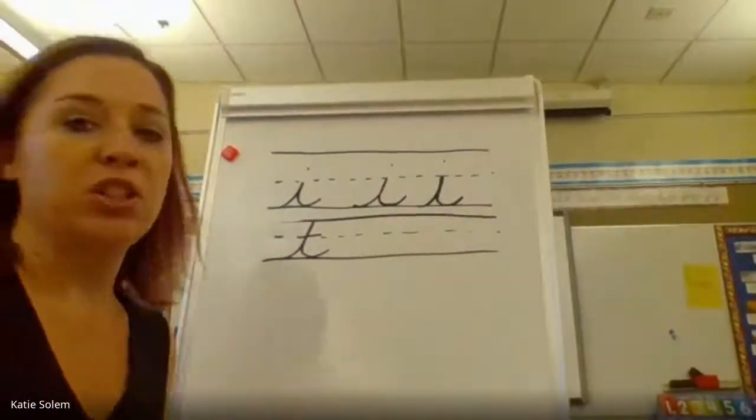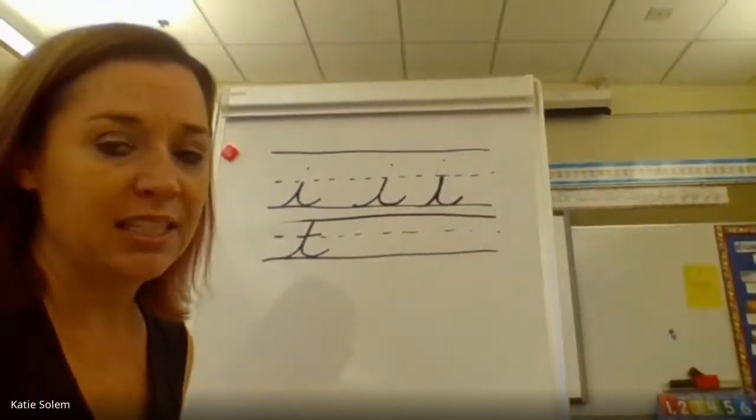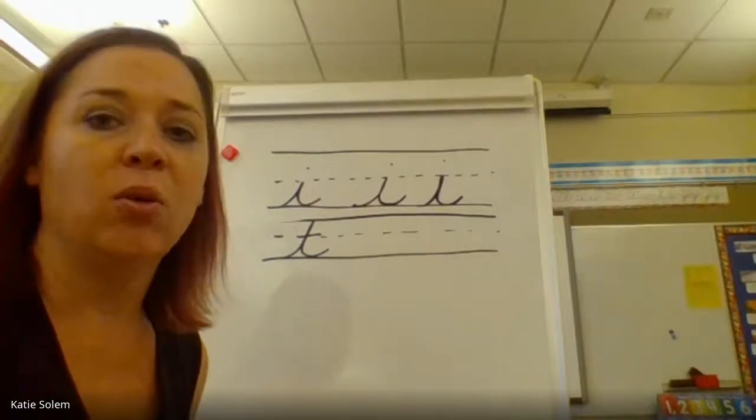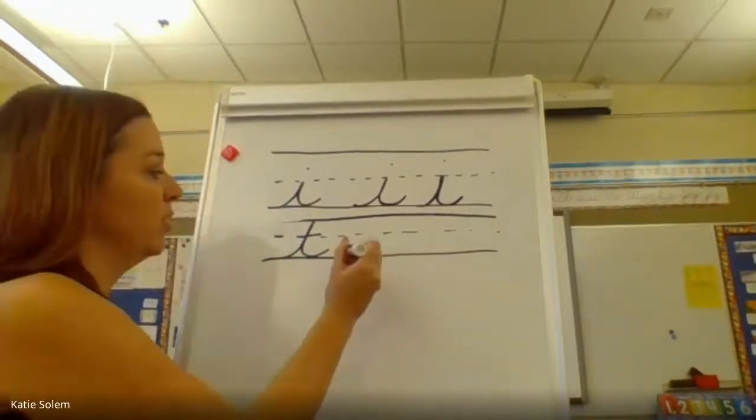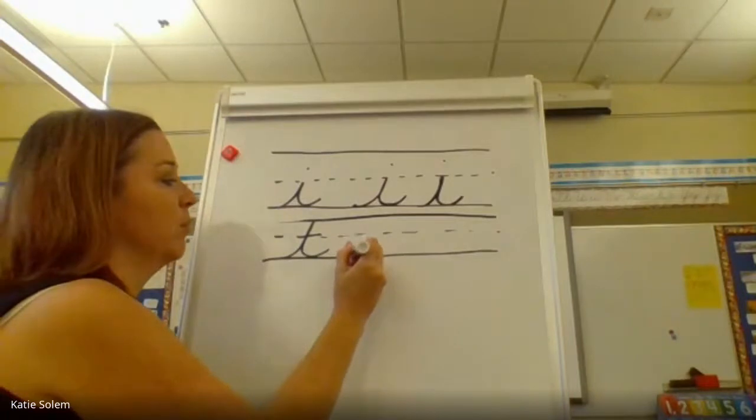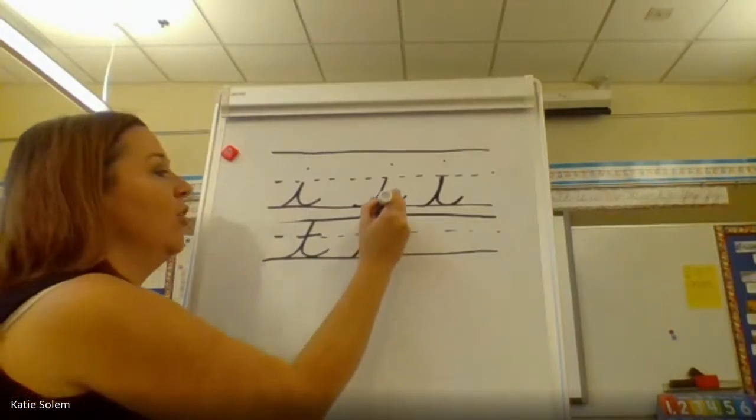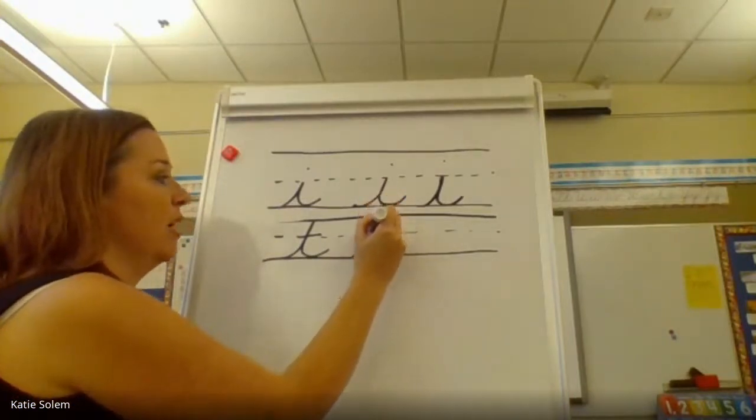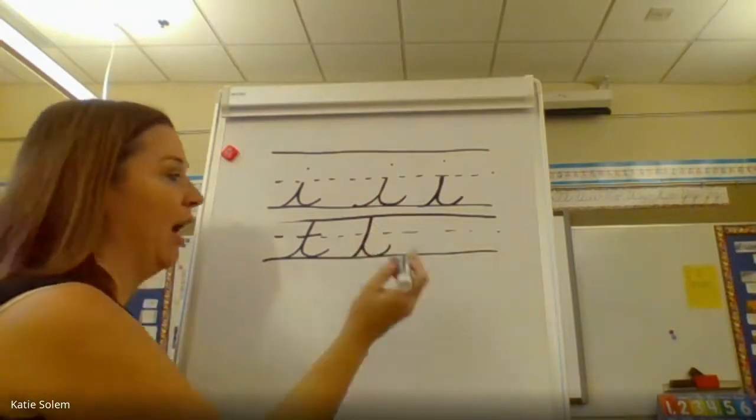The next letter, which is very much like i is t, except t goes all the way to the top line. With t you also start at the bottom, curve all the way up, trace all the way down, and then curve out like an i.